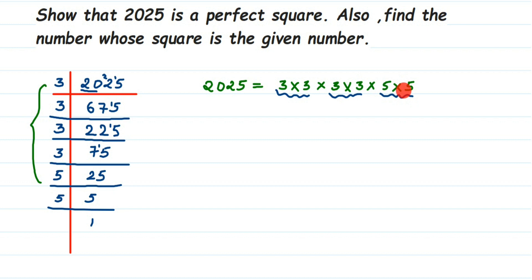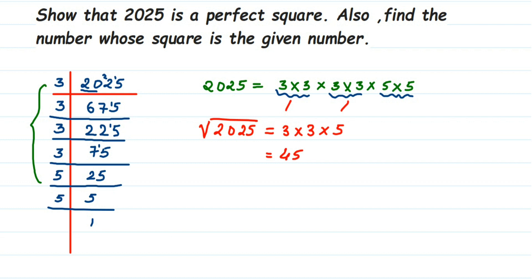Now, to find the square root, from each pair you take one factor and multiply them together. From the first pair take one 3, from the second pair take another 3, and from the 5s pair take one 5. Multiply: 3×3=9, and 9×5=45. So 45² = 2025, or equivalently, the square root of 2025 is 45.